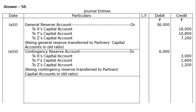Likewise, Contingency Reserve: Contingency Reserve Account debited Rs. 6,000. That is a credit balance debited for nullification. To X's Capital Account Rs. 3,000, To Y's Capital Account Rs. 1,800, To Z's Capital Account Rs. 1,200. Being Contingency Reserve — a credit balance and undistributed profit — debited for cancellation and credited to X's, Y's and Z's capital accounts in old profit sharing ratio.